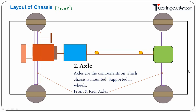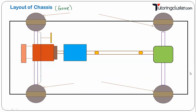Basically, axles are the components on which the chassis is mounted and they are supported by the wheels. The left-hand side arrow is the front axle and this is the rear axle. On the front axle you have the steering system. The rear axle basically consists of a driving shaft enclosed in a tubular structure. So axles are of two types: front axle and rear axle.